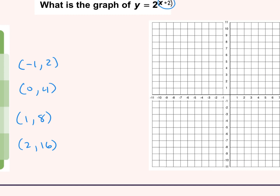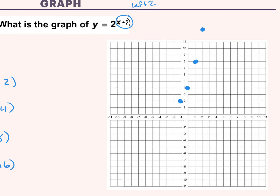So to plot my first point, I go to the left to negative 1 and up 2. Next point: stay at 0, go up 4. Then 1 to the right and up 8. And 2 to the right and up 16 — it's just going to be off our graph a little bit, but that's fine. And then our graph has this shape.